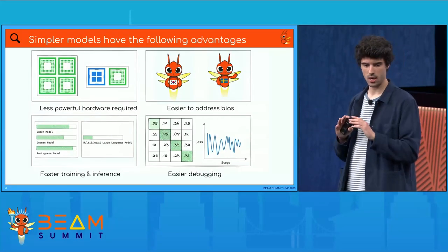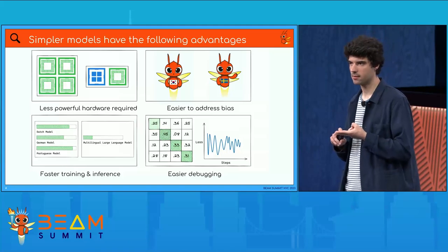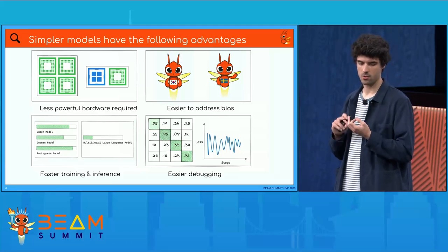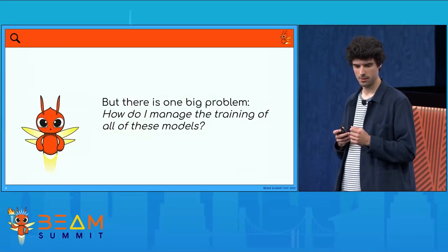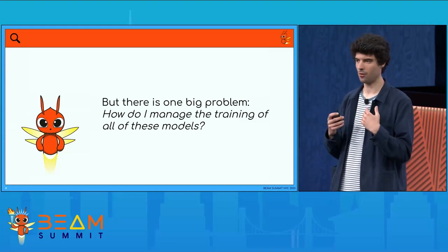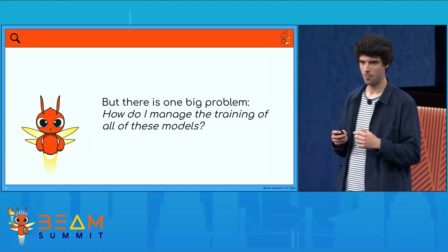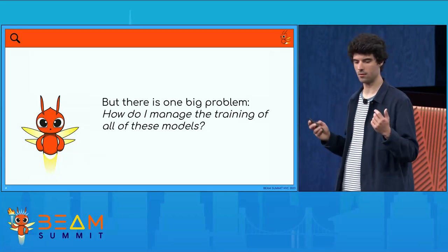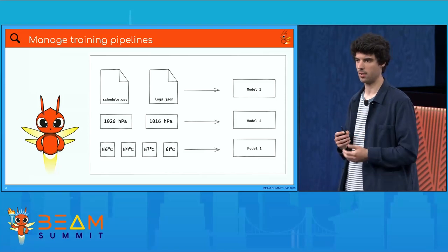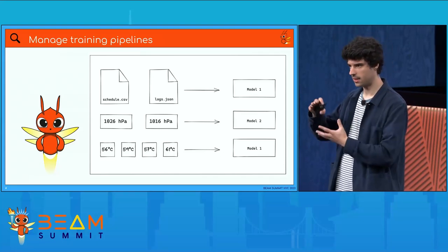To conclude the advantages of per-entity training: we have less powerful hardware requirements, we can address bias and fairness more easily, we can train models a lot faster and serve them a lot faster, and we have easier debugging. But there's one big problem we're still facing — how do I manage the training of all these models? Now I have 20 models to train and 20 models to process data for, coming from all kinds of different sources in all kinds of different formats — different sensors, static data with schemas and schedules. How do I route the correct data to the correct model?